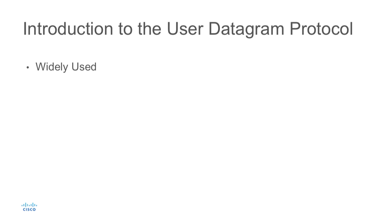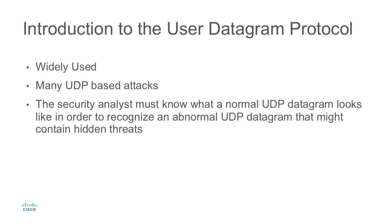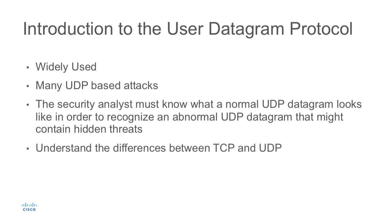The User Datagram Protocol is another widely used Layer 4 protocol, and because it is so widely used, there are going to be many UDP-based attacks. As a security analyst, you have to know what normal UDP datagrams look like and how UDP should function, so you'll be able to recognize an abnormal datagram that could have a hidden threat contained in it. We also need to understand the difference between TCP and UDP so that you're able to distinguish TCP activity versus UDP activity.